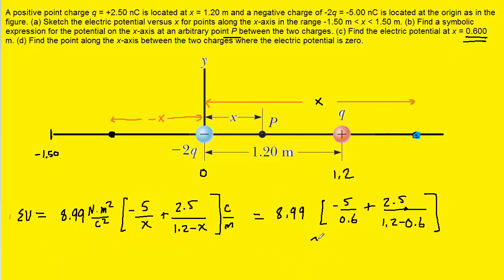For part C, all we have to do is plug in x equals 0.6 into this equation. When you do that, you get approximately negative 37.5 volts, since everything was in standard units. That is the correct answer to part C.